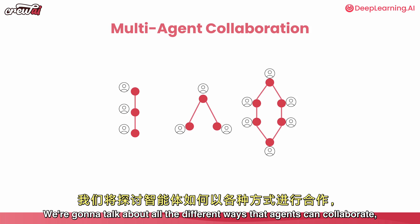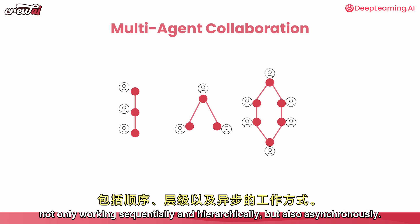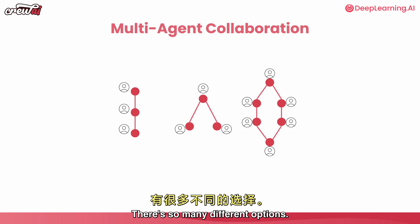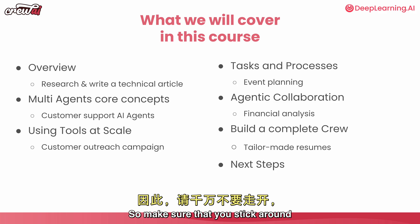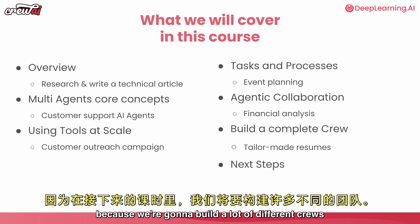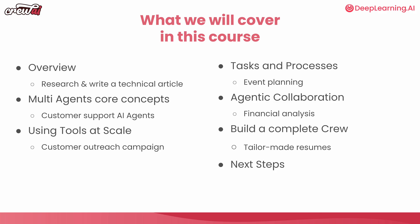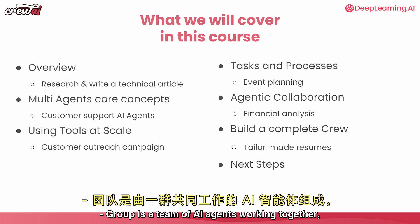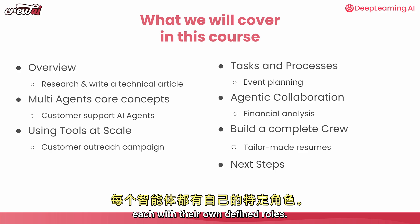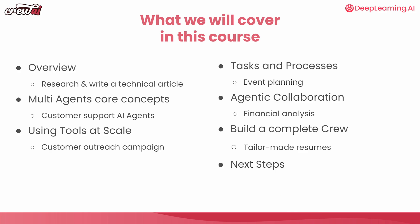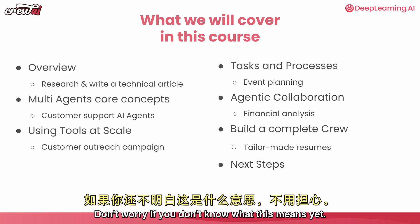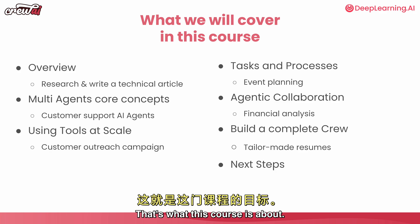We're going to talk about all the different ways that agents can collaborate — not only working sequentially and hierarchically, but also asynchronously. There are so many different options. A crew is a team of AI agents working together, each with their own defined roles. Don't worry if you don't know what this means yet — that's what this course is about.